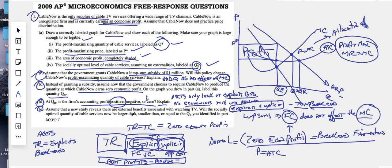Assume that a new study reveals there are external benefits associated with watching TV. Will the socially optimal quantity of cable service now be larger or equal to QS? So now all of a sudden it becomes a positive externality.